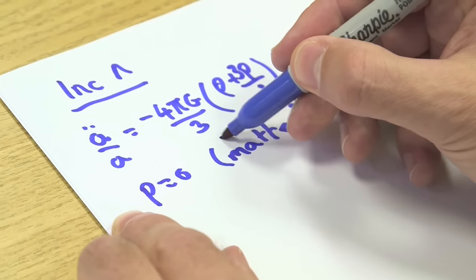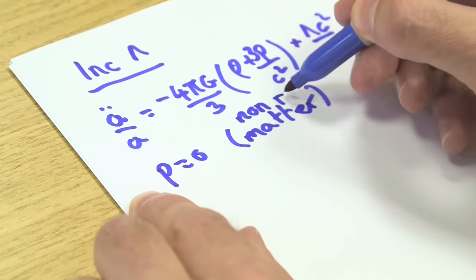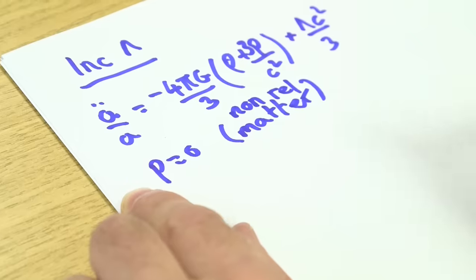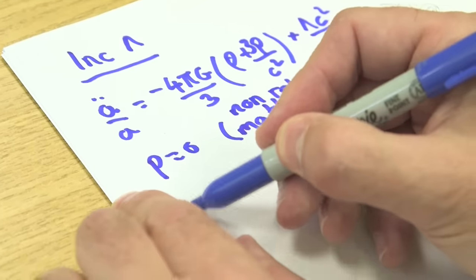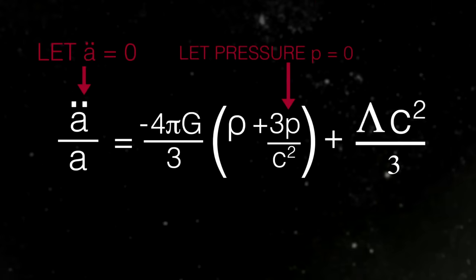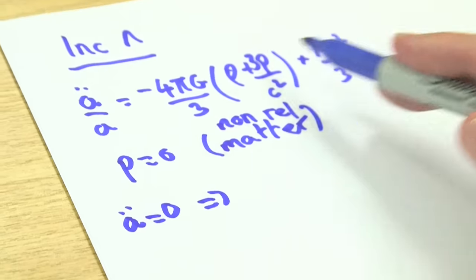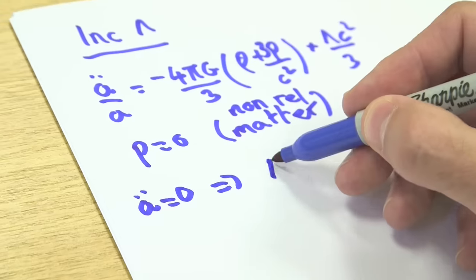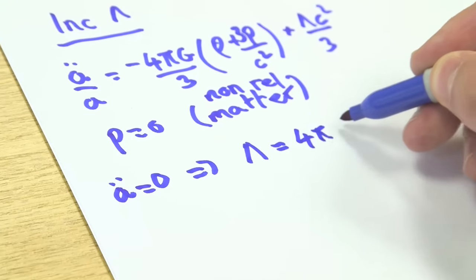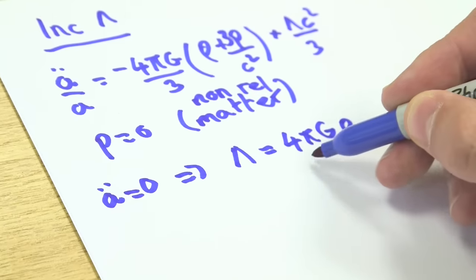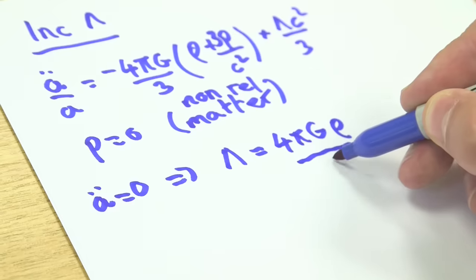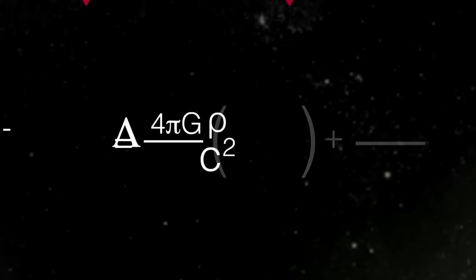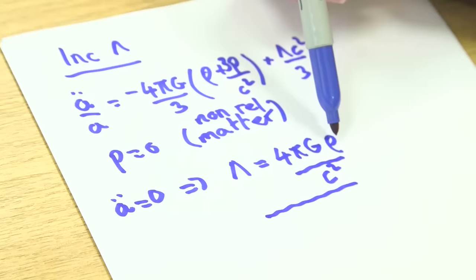Remember I'm saying that p equals zero because we're thinking of this as a universe dominated by non-relativistic matter like you and I are made of. If I set a double dot to be equal to zero, then I have a simple equation. The threes cancel and I have an equation for lambda. It tells me that lambda equals 4 pi g times the energy density in the matter divided by c squared. If he tunes lambda so it exactly matches the energy density, then it will give a universe that doesn't accelerate.